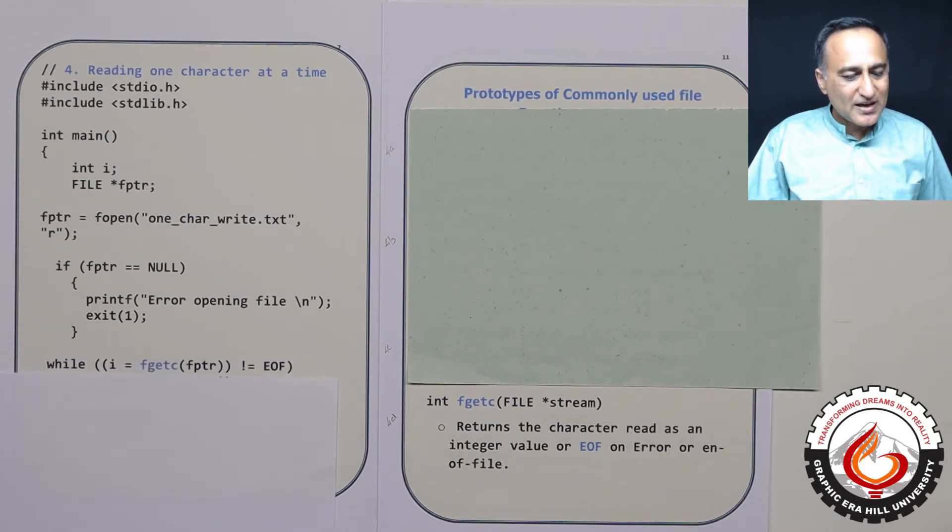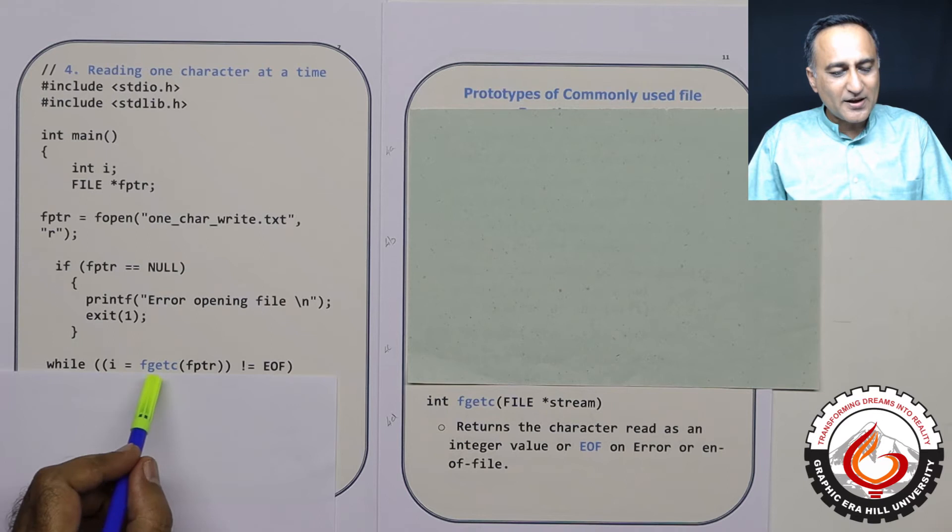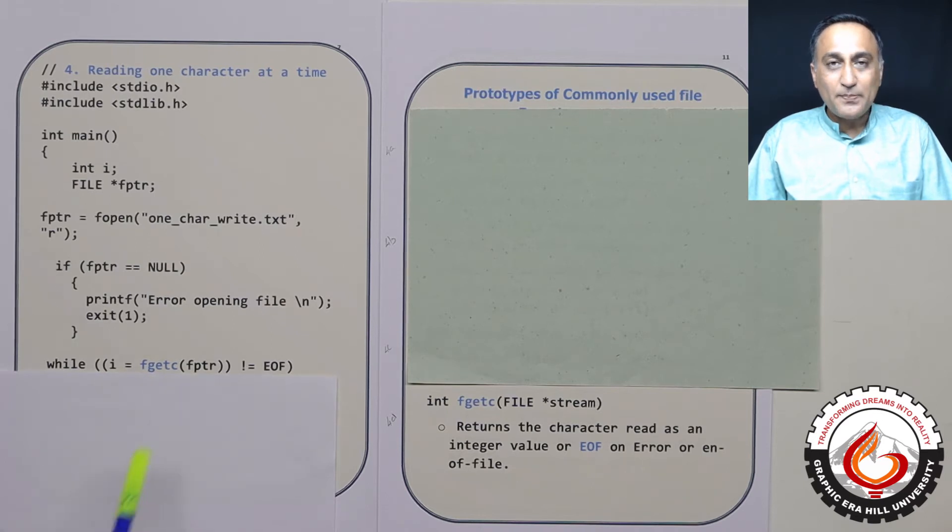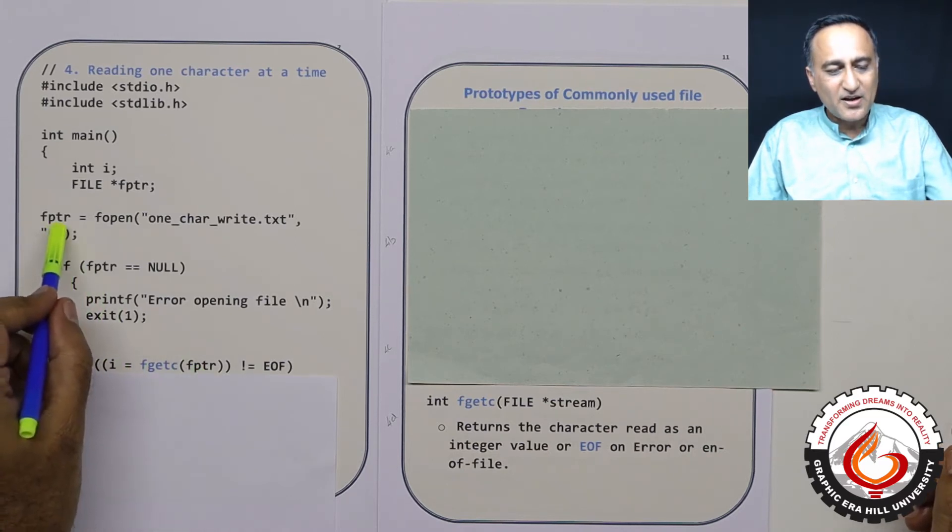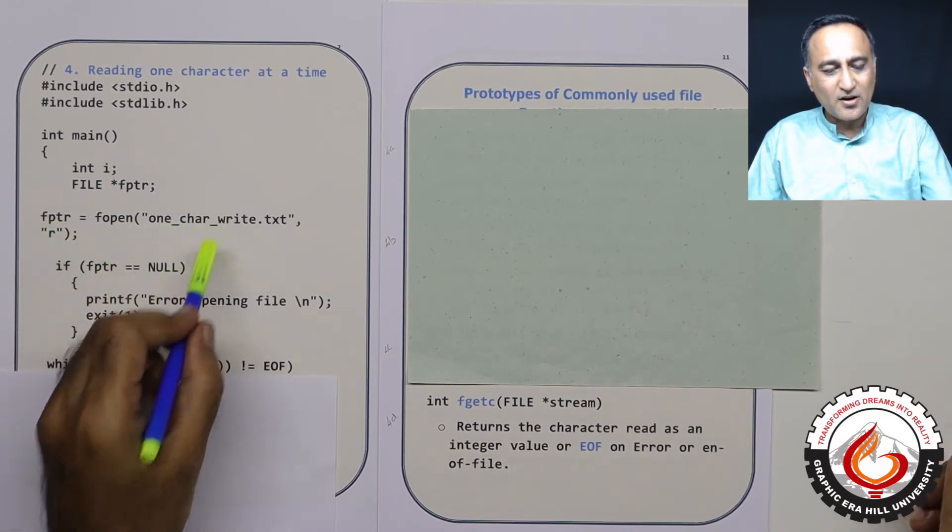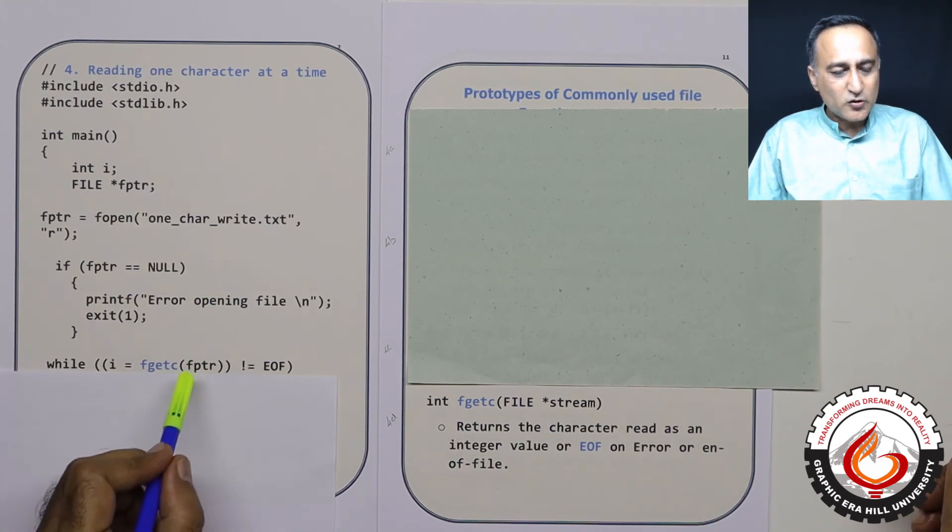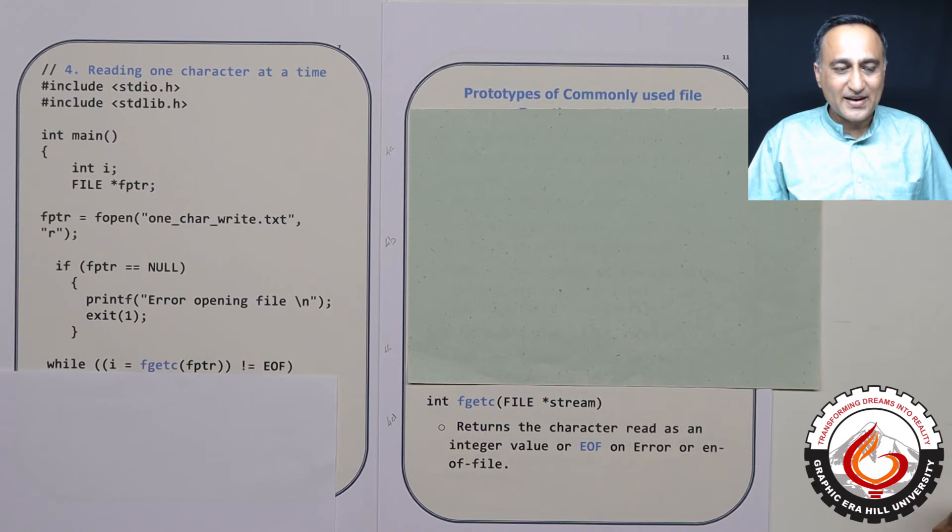So what I am doing in my loop is I am using a function called fgetc. The only parameter to fgetc is the input stream. The input stream is represented by fptr which represents this particular file on the hard disk.